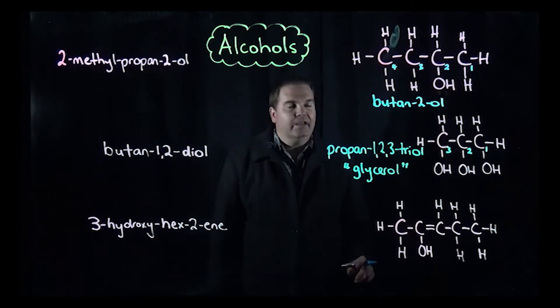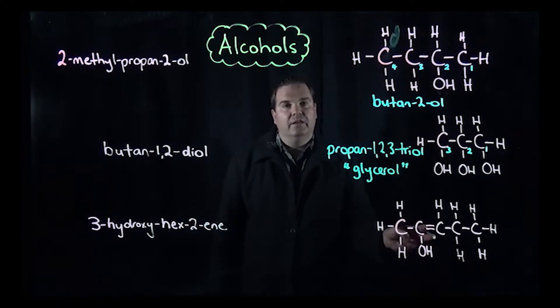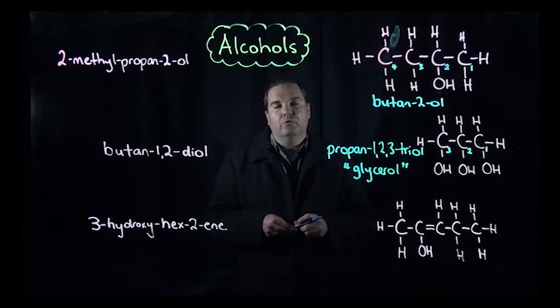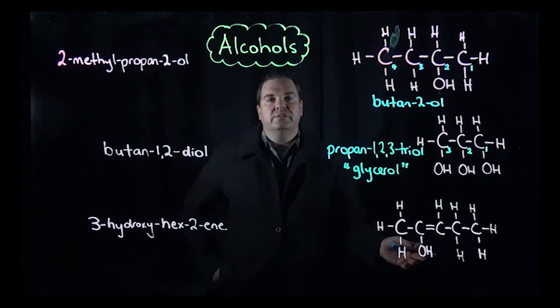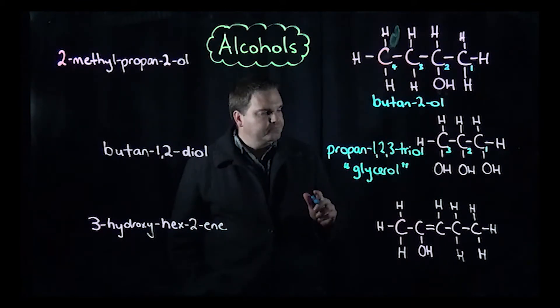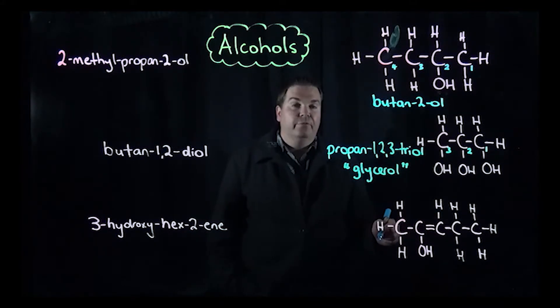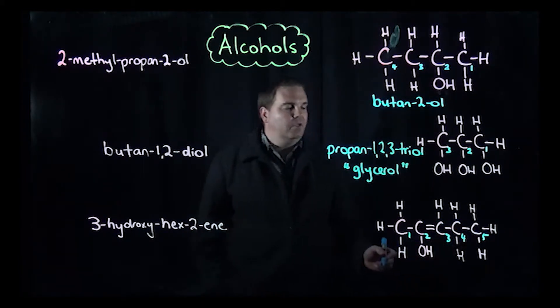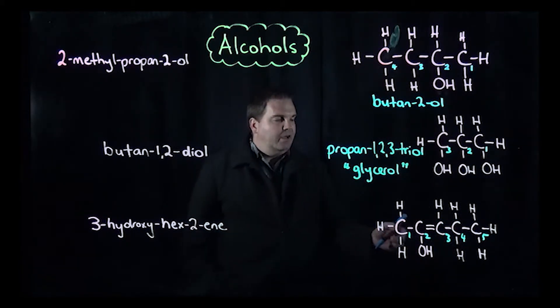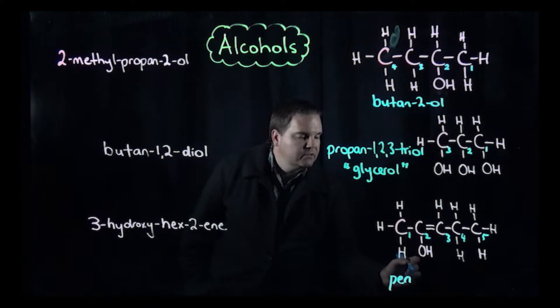This one down the bottom has an OH and an alkene, so the alcohol doesn't take preference for our naming - the alkene does. The alcohol goes at the front of our name. We count the carbon atoms in the chain, which is five, making it pent. We number from the end closest to the functional group: one, two, three, four, five. We name the alkene, so it's pent-2-ene.